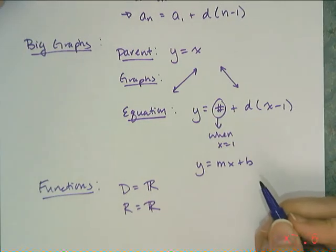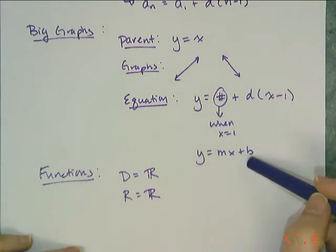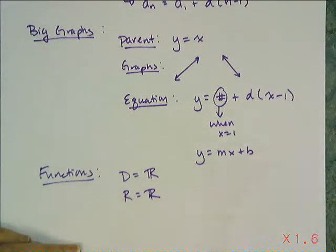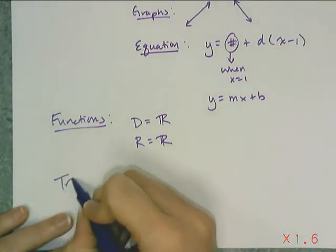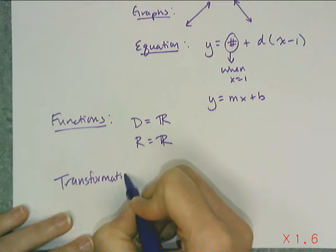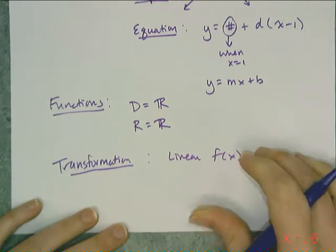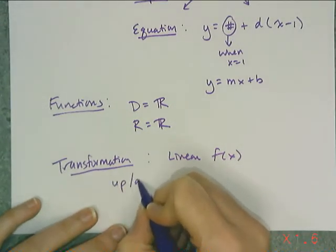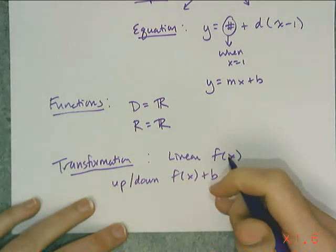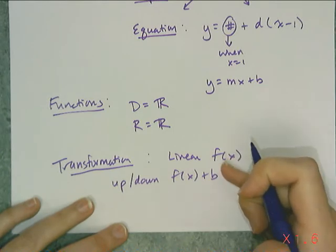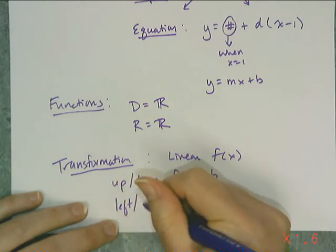Then we moved on to transformations. Transformations were basically: take an equation and do things to the equation to change the way the graph looks. For transformations for linear functions, if I have some linear function f(x) and I wanted to move f(x) up or down, I had to add a quantity to the function rule. If I added a positive number it would move the graph up, and if I added a negative number or subtracted a number, it would move the graph down.